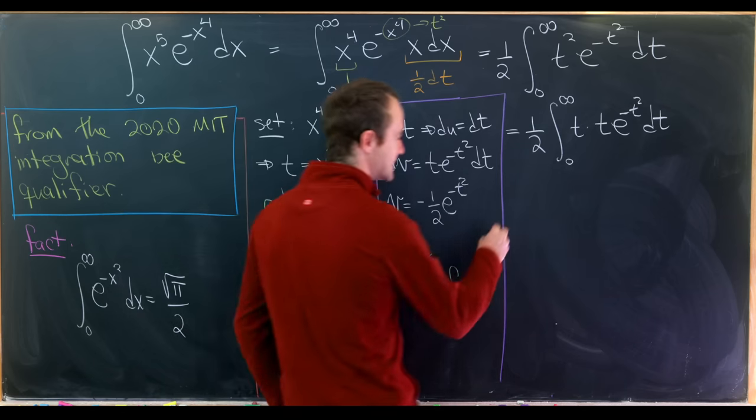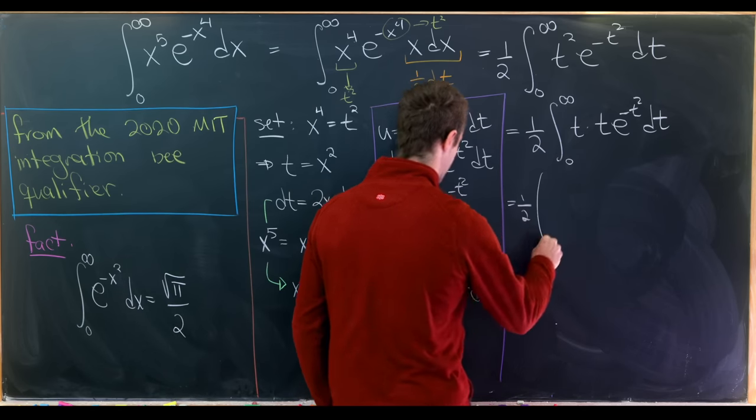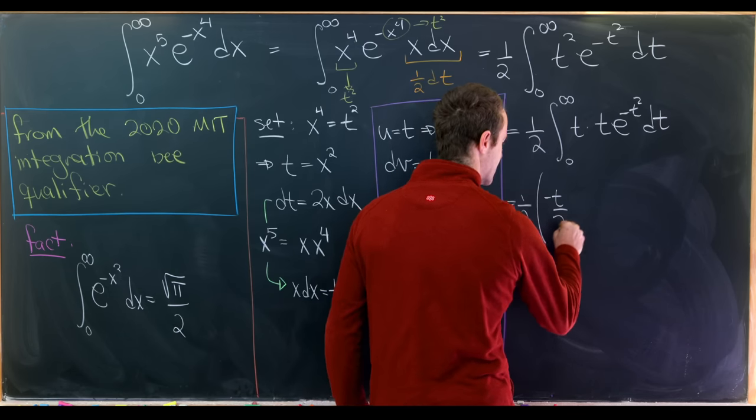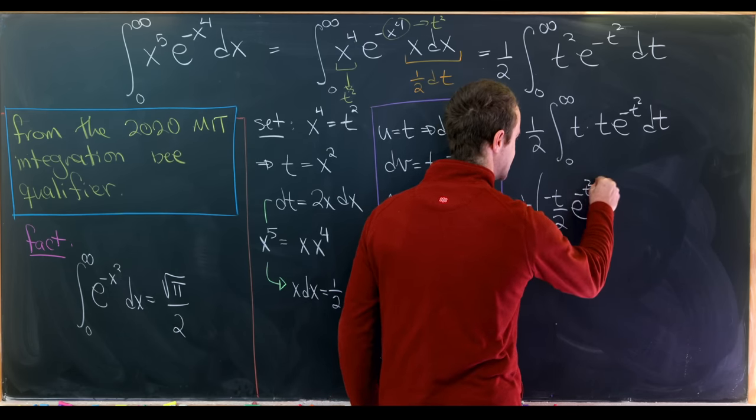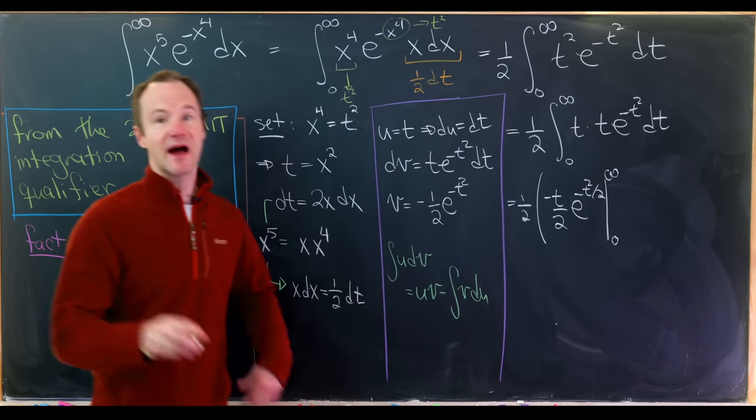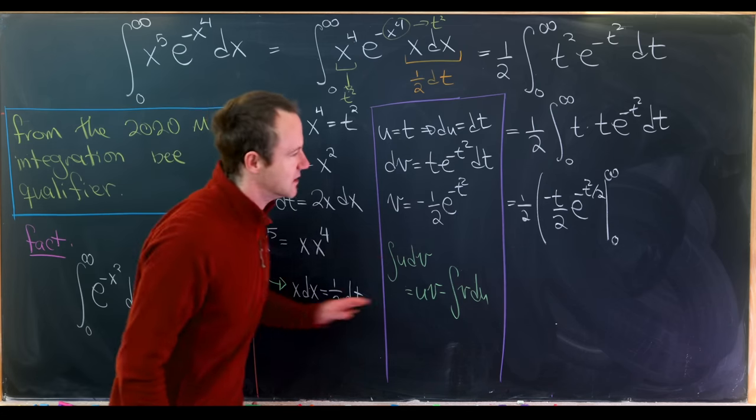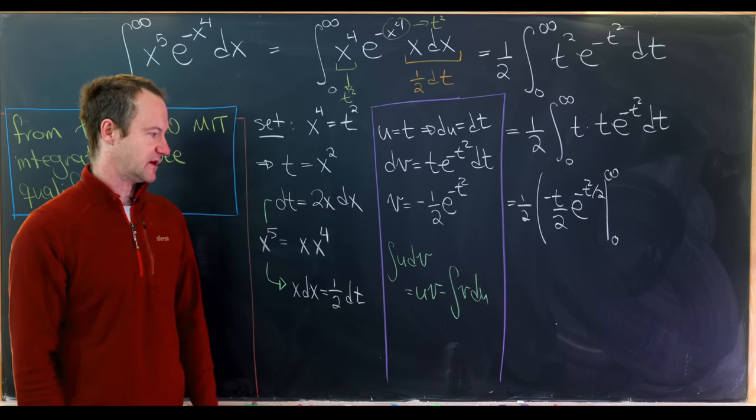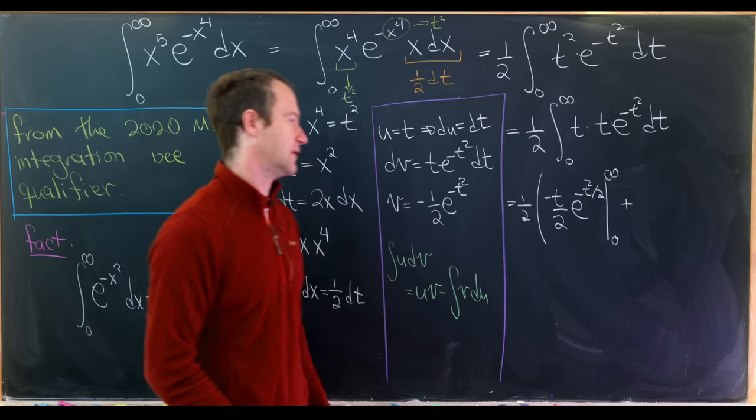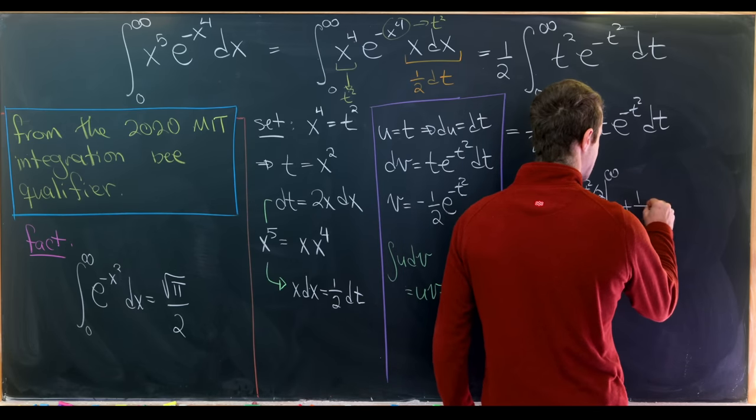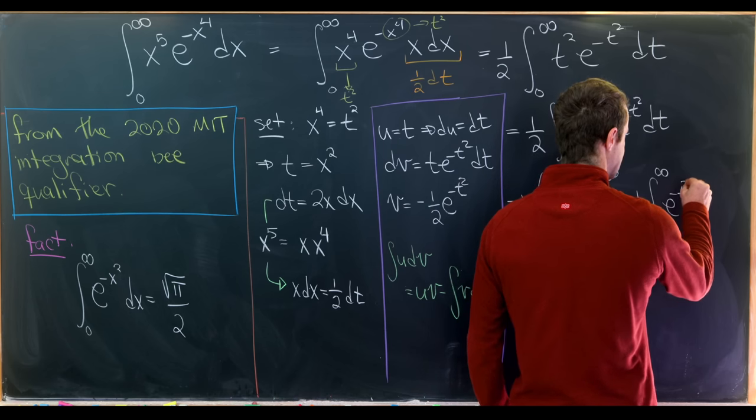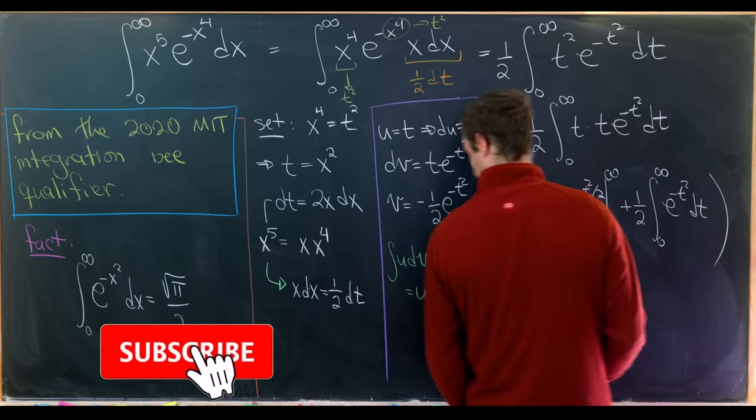So that means we can write this thing as we'll have this one half out front, and then we'll have u times v, that will be minus t over 2, e to the minus t squared over 2, evaluated from zero to infinity, whereby evaluated at infinity, I really mean we're taking the limit as t goes to infinity, and then minus the integral of v du, but that's attached to a minus sign, and we also have a half. So we have plus a half the integral from zero up to infinity of e to the minus t squared dt. So we're left with something like this.